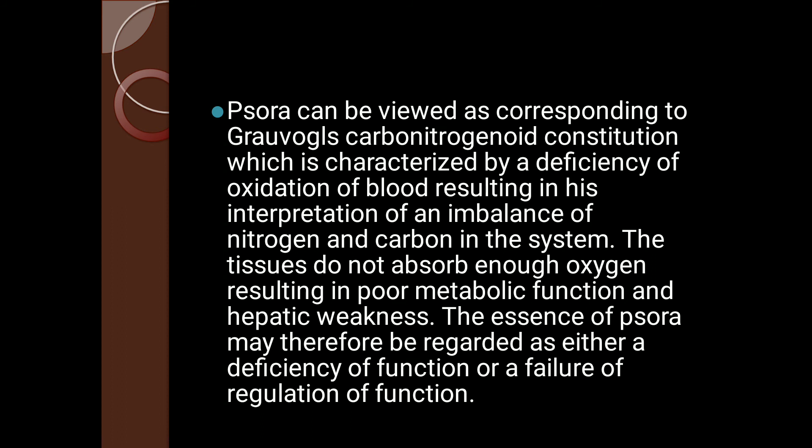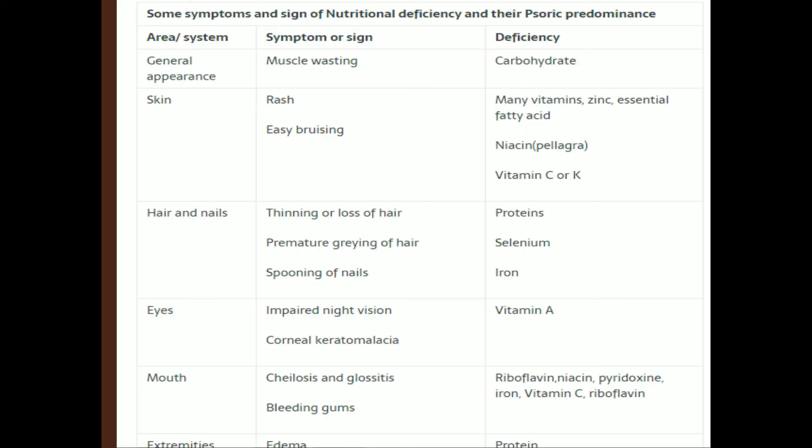Psora can be viewed as corresponding to Von Grauvogl's carbon-nitrogenite constitution, characterized by deficiency of oxidation of blood, resulting in an imbalance of nitrogen and carbon in the system. The tissues do not absorb enough oxygen, resulting in poor metabolic function and hepatic weakness. The essence of Psora may therefore be regarded as either deficiency of function or failure of regulation of function.